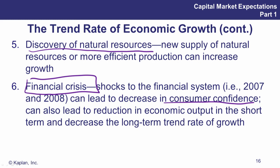The book talks about types of crisis. The type of crisis that leads to a reduction in output in the short term is called a Type One. A decrease in the long-term trend rate of growth is called a Type Two crisis. And interestingly, if you have both one and two, you call this a Type Three. They give the example in the text about the Eurozone, where there was a Type One and a Type Two combined — they call that a Type Three crisis.